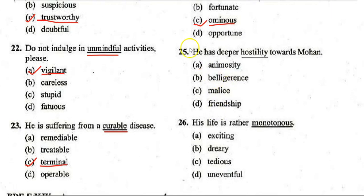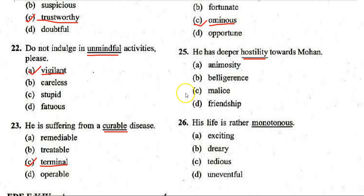Next: 'He has deep hostility towards Mohan.' Options: A. Animosity, B. Belligerence, C. Malice, D. Friendship. The correct answer is D — 'friendship.' The antonym of 'hostility' is 'friendship.'